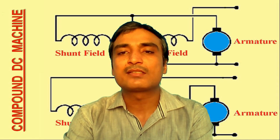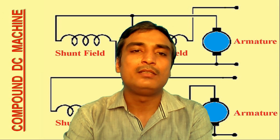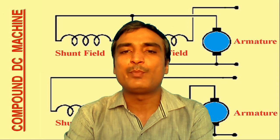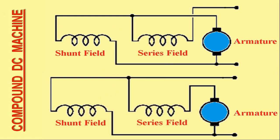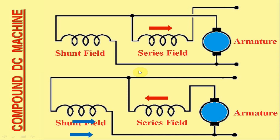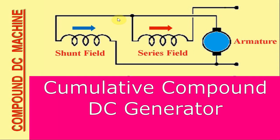To understand the difference between cumulative and differential compound, let us first consider that these compound DC machines are operating in generating mode. For both the short shunt and long shunt arrangements, the direction of the currents in series field windings of the compound DC generator are as indicated by the red arrows, and the directions of the currents in shunt field windings are as indicated by the blue arrows. In the short shunt compound DC generator, the direction of the current in the series field winding is identical to that in the shunt field winding. Consequently, the series field strengthens the shunt field, and therefore such a generator is said to be a cumulative compound DC generator.